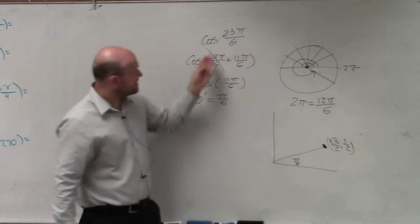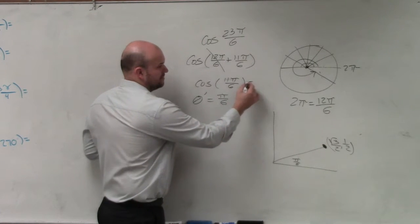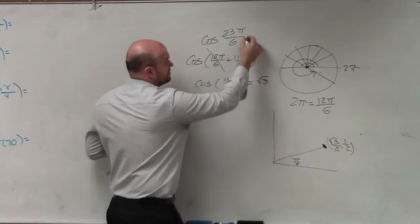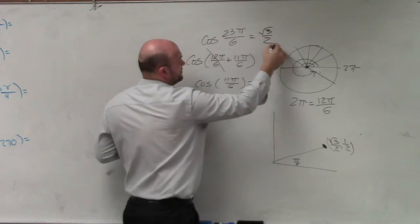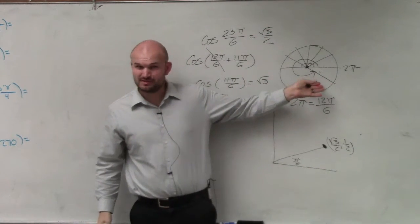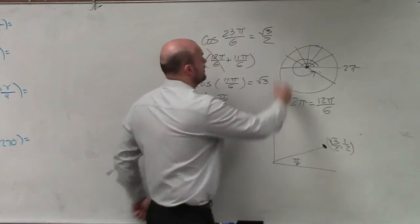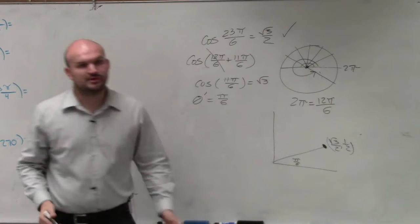So the cosine of that represents the x-coordinate, which is square root of 3 over 2. However, it's in the fourth quadrant. Is cosine still positive in the fourth quadrant? Yes. So that's your answer, square root of 3 over 2.